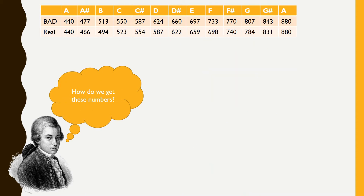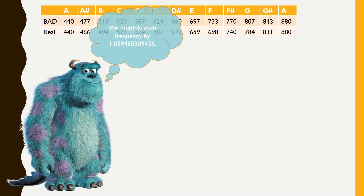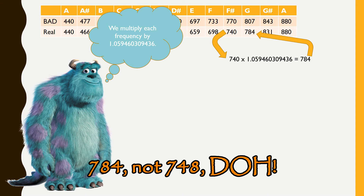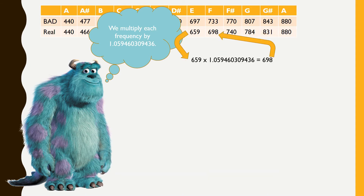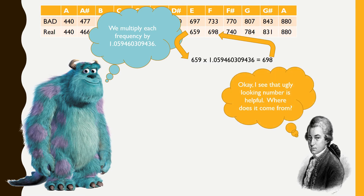So where do we get all those numbers? All you have to do is multiply by 1.059460309436. Look — 740 times that number is 748, and 659 times that number is 698. It works always and forever, and you can build all the notes with this number, which is absolutely wonderful. But it doesn't explain where it came from.